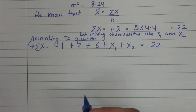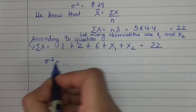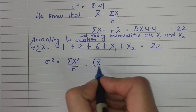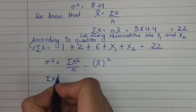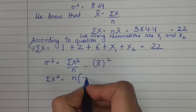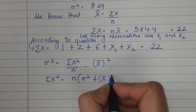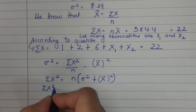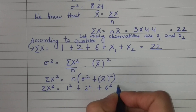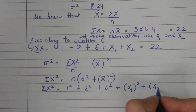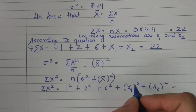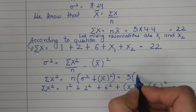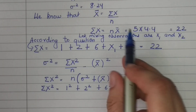For the variance formula: variance = sigma x²/n − mean² → sigma x² = n × (variance + mean²) = 5 × (8.24 + 4.4²) = 5 × (8.24 + 19.36) = 5 × 27.60 = 138. So sigma x² = 138. Since 1² + 2² + 6² = 1 + 4 + 36 = 41, we get x₁² + x₂² = 138 − 41 = 97. This is Equation 2.